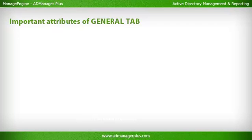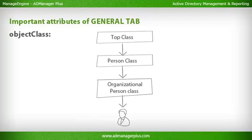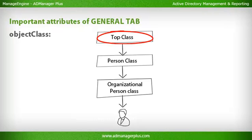Some of the important attributes under the General tab. Object Class: This attribute is a multi-valued array and is published in the Global Catalog. The User Object Class is derived from Top Class, Person Class, and Organizational Person Class. Top Class is the superclass from which all Active Directory Object Classes are derived.